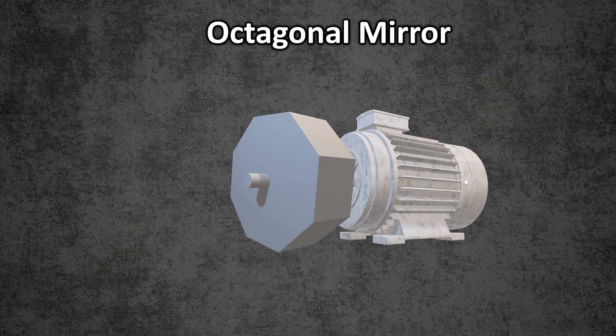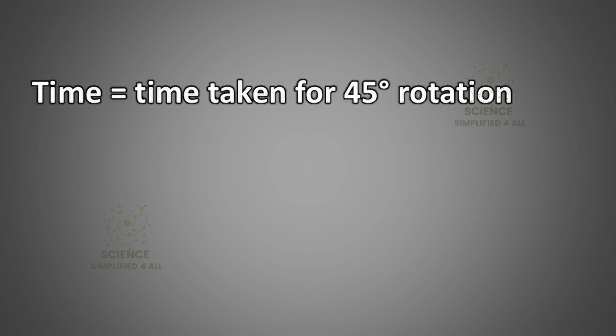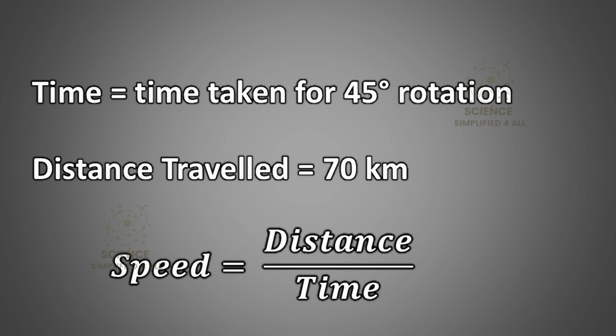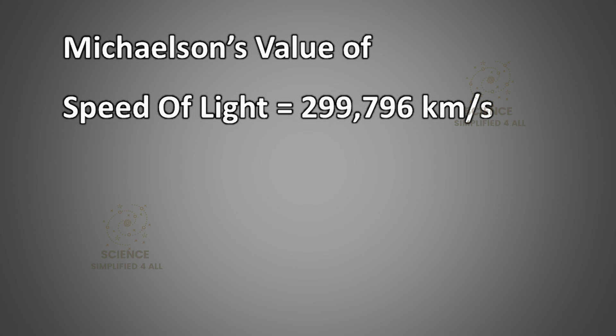By knowing the speed of rotation, Michelson determines the time it takes for the mirror to rotate 45 degrees. Since the total distance travelled by the light is known, 70 kilometers, he calculates the speed of light using the formula speed equals distance divided by time. Through this method, Michelson measured the speed of light to be 299,796 kilometers per second.